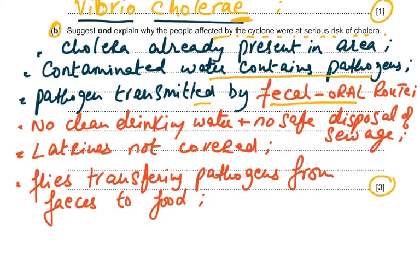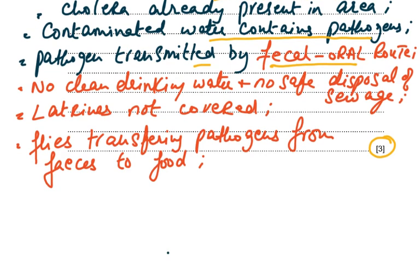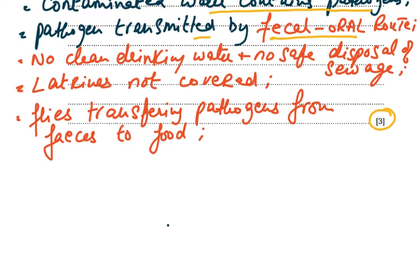Because of the cyclone, houses were destroyed, water supply pipes were damaged, and sewage disposal systems were disrupted — meaning no clean drinking water and no safe disposal of sewage. Flies transferring pathogens from feces to food was a key mechanism. Any three of these points would answer the three-mark question.